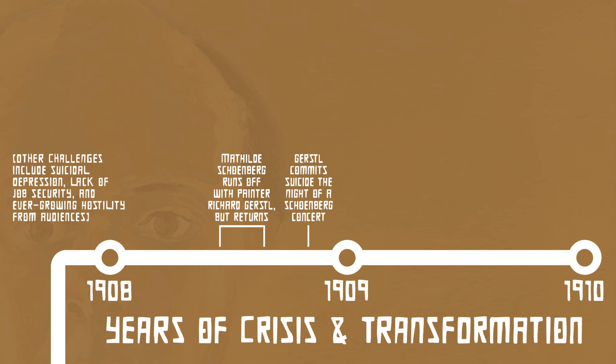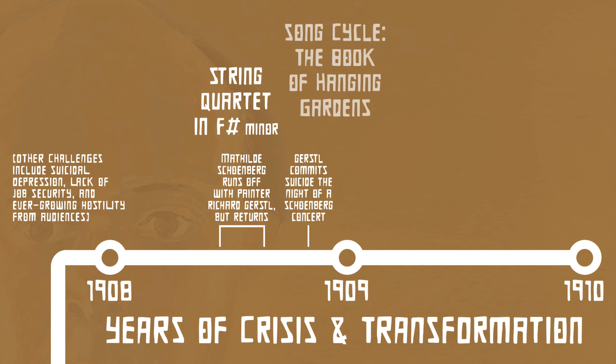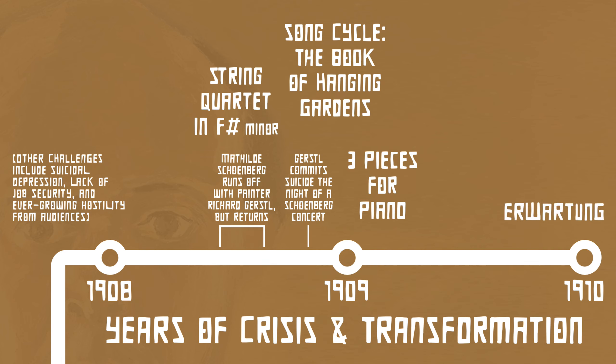His response was to release a mighty tide of music, each breaking down tonality a little more as they progressed: the second string quartet, his song cycle The Book of Hanging Gardens, the Three Pieces for Piano, and the monodrama Erwartung, the last of which was composed in only two weeks.